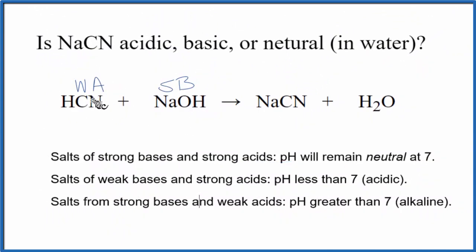So we have a weak acid and a strong base. Here's weak acid and strong base. That means the pH will be greater than 7. It's going to be alkaline - we also call that basic.